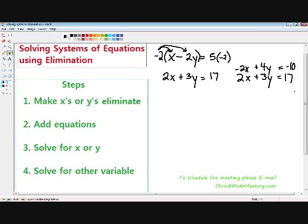So step number 2, add the equations. Once again, the negative 2x and the positive 2x eliminate. If you add 4y and 3y, that turns into 7y. And if you add negative 10 and positive 17, you get positive 7. Now we just need to solve for our y. You divide both sides by 7, and you get y equals 1.